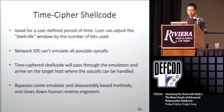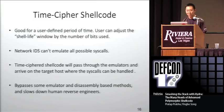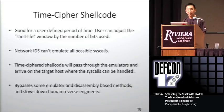This also introduces the concept of a shell life, where a user can specify how long a window this shellcode can run for. Because we use the time syscall, we can specify, say, seven most significant bytes, and that gives you a five-minute window when this shellcode is valid. After five minutes, the shellcode will not decrypt properly and it's hard to disassemble it. Network IDS cannot emulate all possible syscalls — that's the main idea behind the time cipher. It bypasses emulators and dynamic disassembly-based methods, and it slows down human reverse engineers, because it's very hard to figure out exactly where these small mechanisms are.